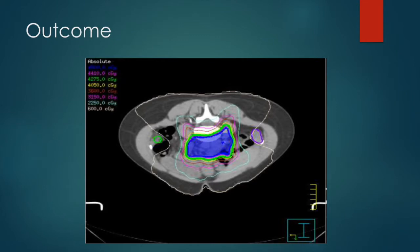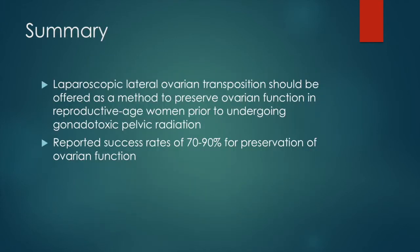A post-surgical radiation mapping CAT scan confirmed that the ovaries were outside of the high-intensity radiation zone, and six weeks postoperatively, she continued to have a regular period and was without menopausal symptoms. In summary, laparoscopic lateral ovarian transposition is a safe and efficacious procedure and should be offered as a method to preserve ovarian function in reproductive-age women prior to undergoing gonadotoxic pelvic radiation.